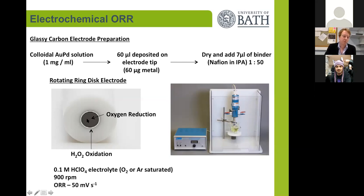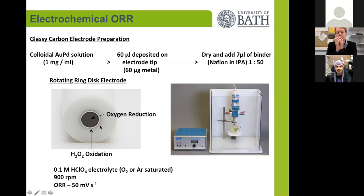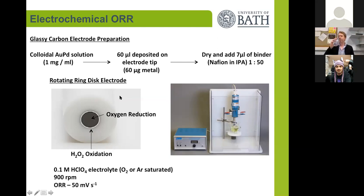Oxygen is being reduced on the electrode. The hydrogen peroxide which is produced is then being spun off the disc, and when it hits the platinum ring, it is oxidized. We can monitor the oxidation current to determine how much peroxide we are making. Any water that we produce will not have an oxidation current when it hits the platinum. So this lets us monitor the selectivity of our system.